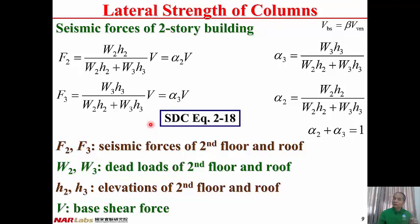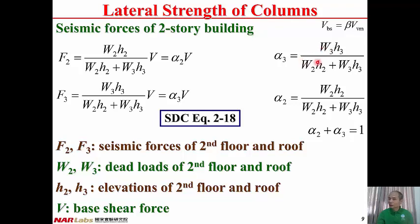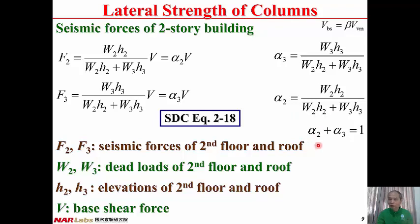This is taken from the seismic design code, equation 2-18. Alpha3 is a non-dimensional number equal to (W3 × H3) / (W2 × H2 + W3 × H3). Alpha2 equals (W2 × H2) / (W2 × H2 + W3 × H3). And alpha2 plus alpha3 equals 1. F2 and F3 are the seismic forces of the second floor and roof. W2 and W3 are the weights of the second floor and roof. H2 and H3 are their elevations. V is the base shear force.